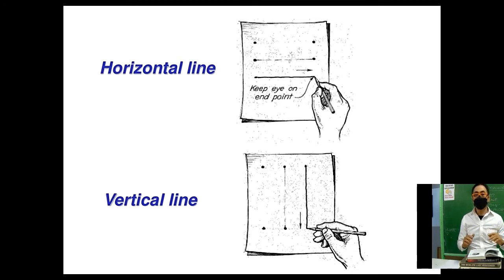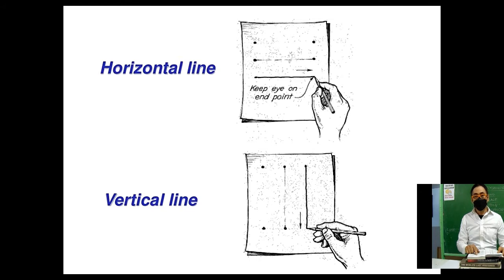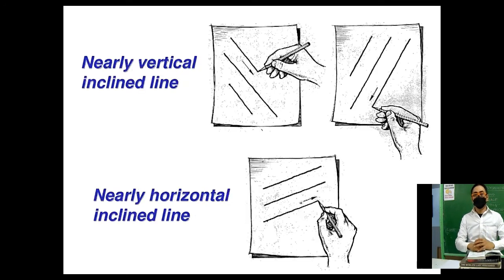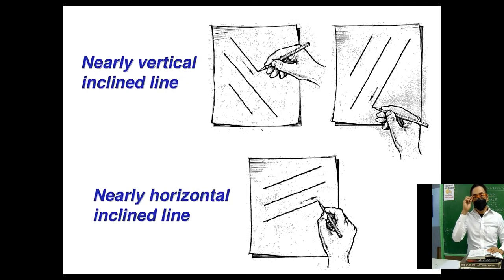Make your own exercises using horizontal and vertical lines. Draw as many lines as you can so that you can perfect straight lines without using any ruler. Once you are through with vertical and horizontal lines, it is time to learn to draw inclined lines.